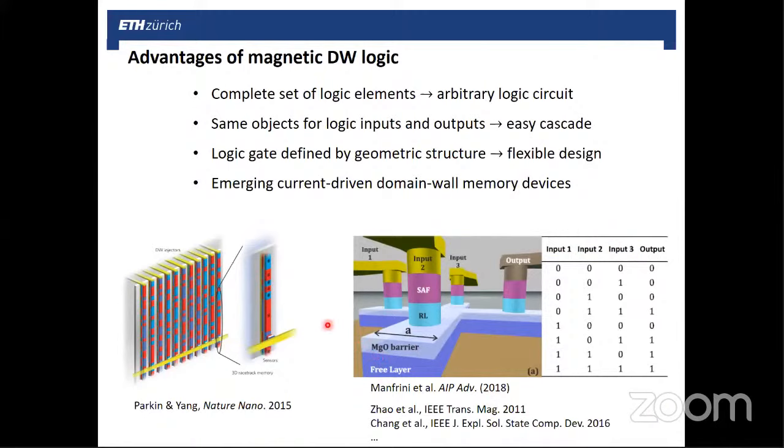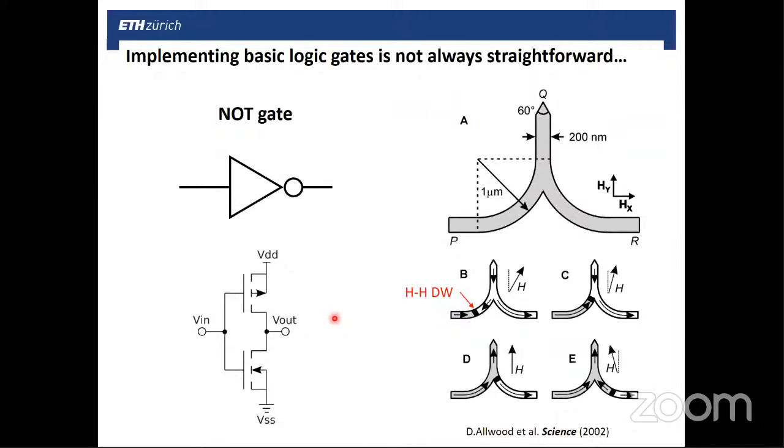Then there are already proposals for using domain walls as information carriers or domains as information carriers in racetrack devices, as well as in magnetic logic devices. However, most magnetic logic devices are—let's say we lacked so far electrically operated magnetic logic devices. One reason why it was difficult to implement logic gates using domain walls is the fact that one of the basic operations in logics, the inversion, is hard to achieve for domain walls.